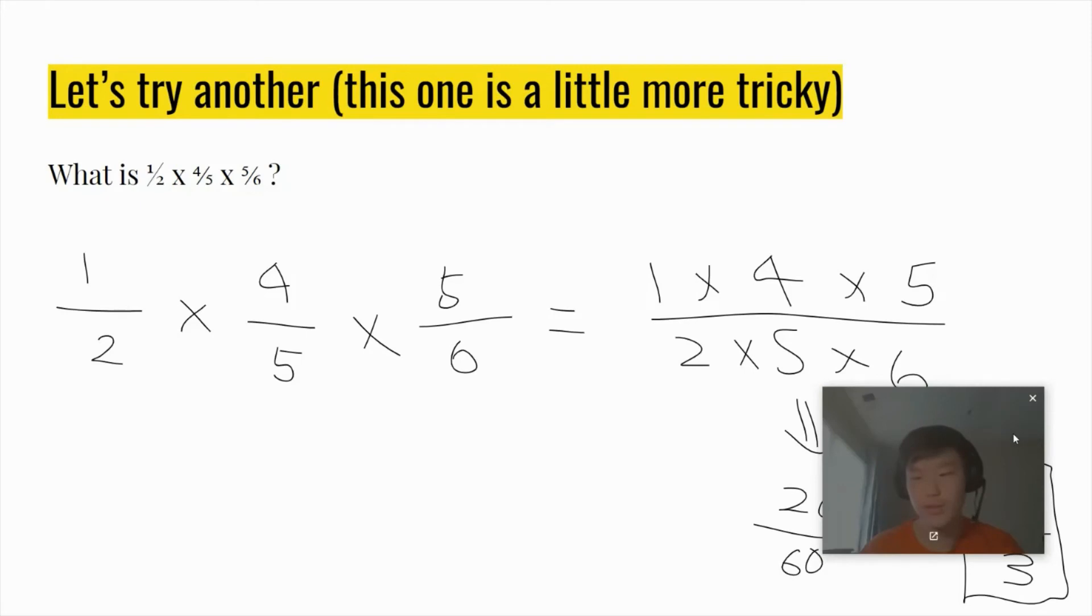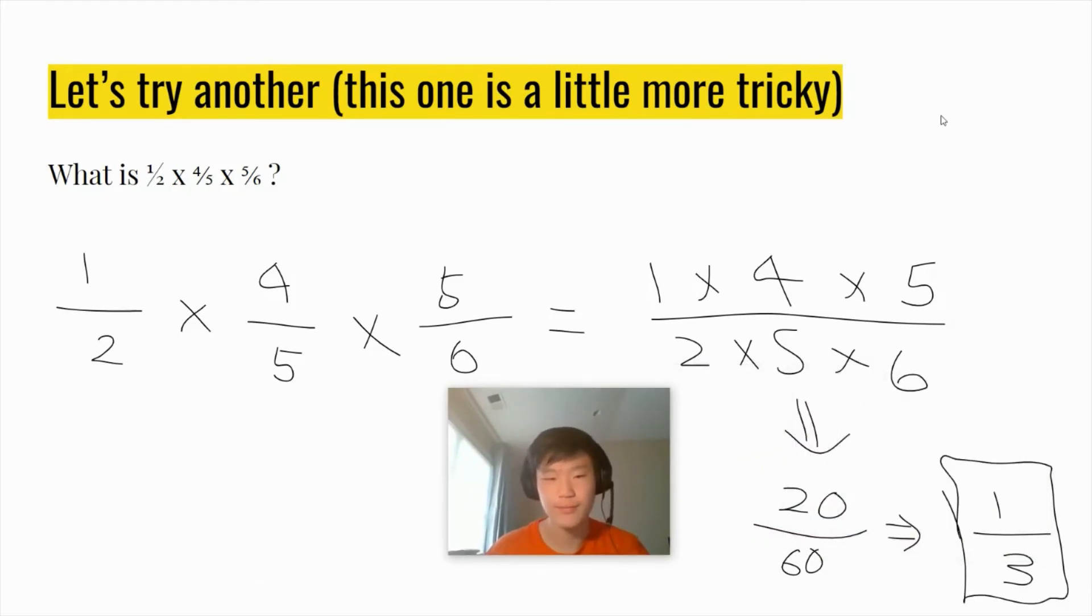Let's try another one. This one's a little more tricky. 1/2 × 4/5 × 5/6. So if we multiply the numerators and denominators together separately, we have 1 × 4 × 5 in the numerator and 2 × 5 × 6 in the denominator. When we multiply all those together separately, we get 20/60. And then if we divide it by 10/10, which is the same as 1, we get the same answer as 1/3. That is our final answer.